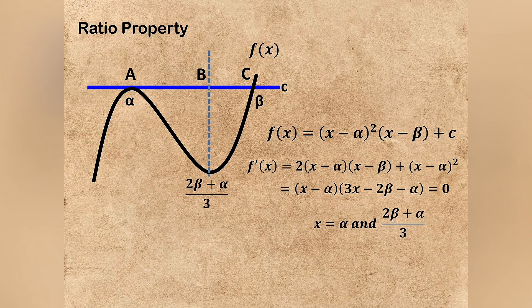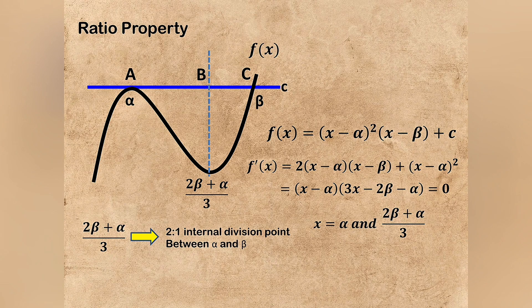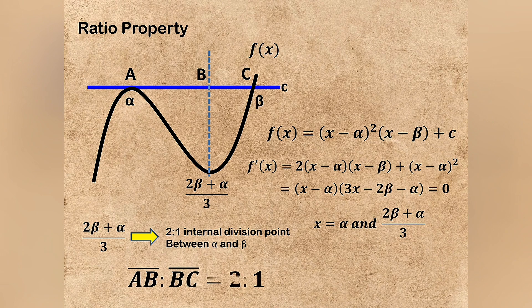Now let's talk about this (2β+α)/3. This is the value as 2 to 1 internal division point between α and β. So that is why the line segment AB to the line segment BC is 2 to 1. How amazing.